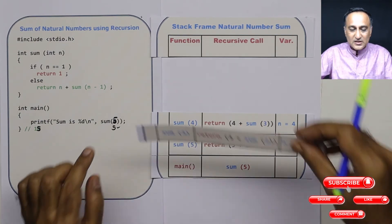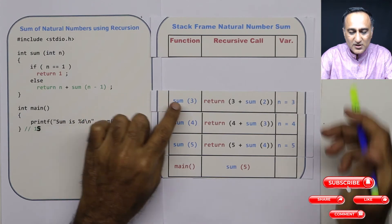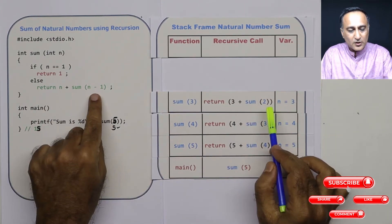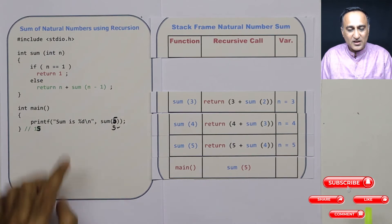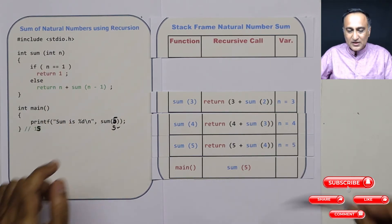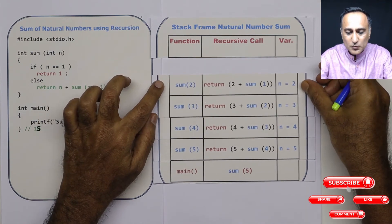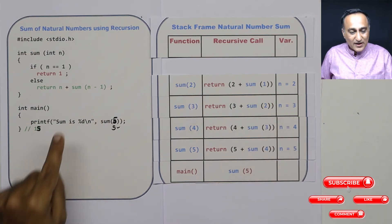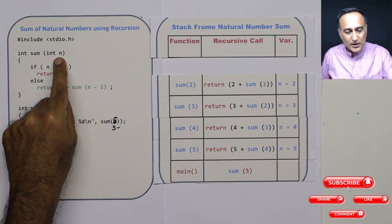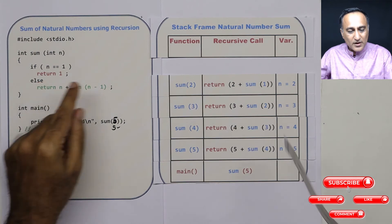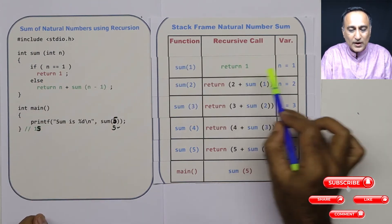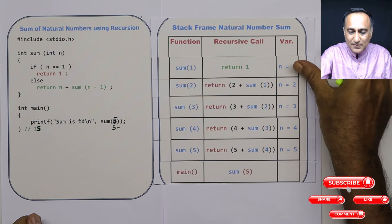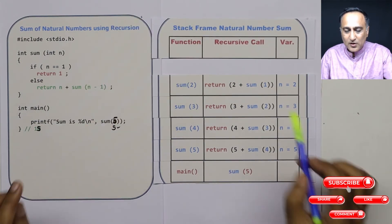Now I am calling sum of 3. When calling this function sum with initial parameter 3, 3 equal to 1 is false, so it is 3 plus sum of 2. n is 3 when it entered the function. So now I am trying to find sum of 2. Sum of 2 happens to be 2 plus sum of 1. When n becomes 1, 1 equal to 1 is true. So when I am calling sum with the value 1, I am returning 1. n as 1 is being returned, so this sum of 1 is replaced with 1. Now since I am returning, this activation record is popped out of the stack.